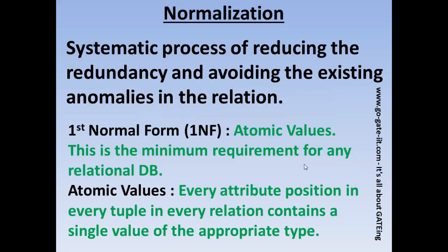Normalization is a systematic process of reducing the redundancy and avoiding the existing anomalies in the relation. You would have noticed while development that various tables will contain redundant data. Say you are storing the name of a customer in table A and in table B also you are storing the name of the customer once again. This is called redundancy or repetition of data. So to optimize the structure or the architecture of the database, we have normalization.